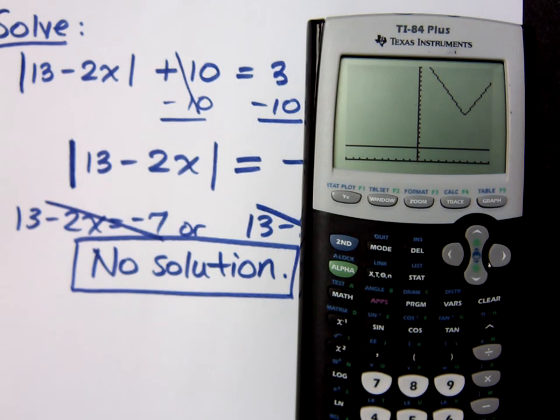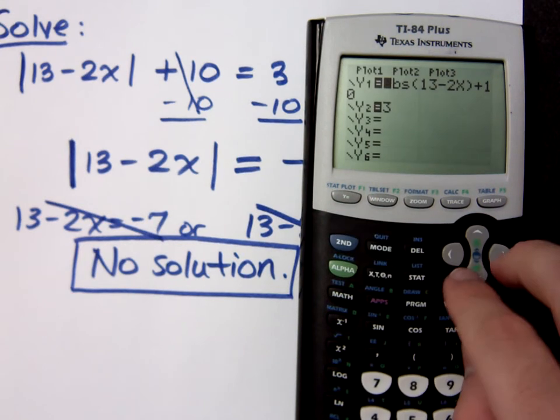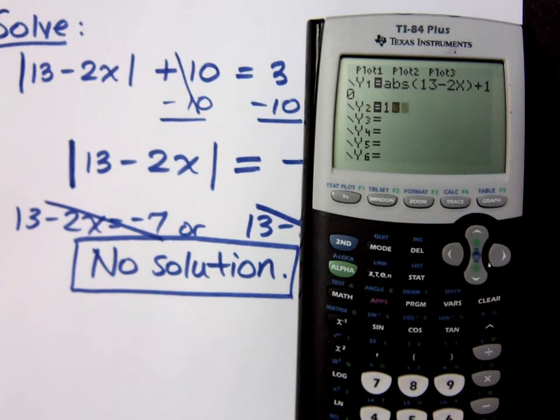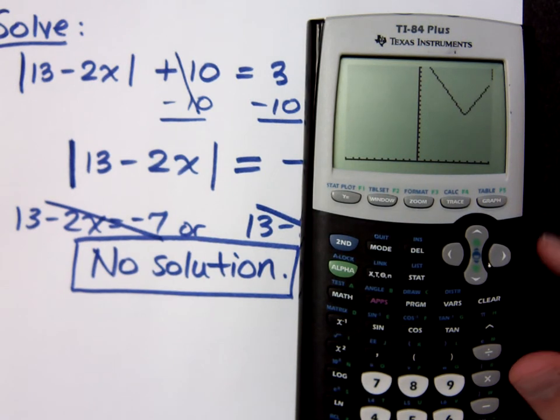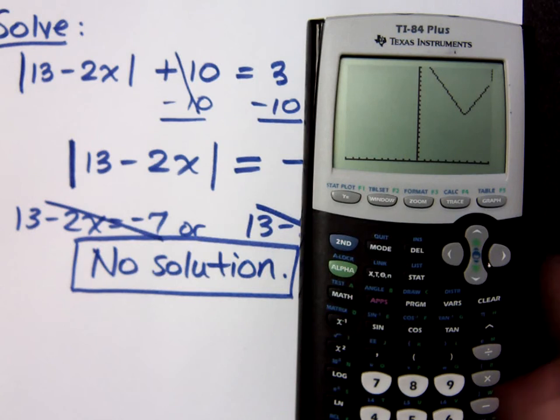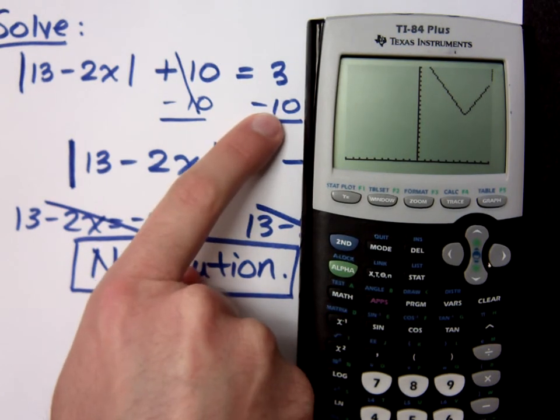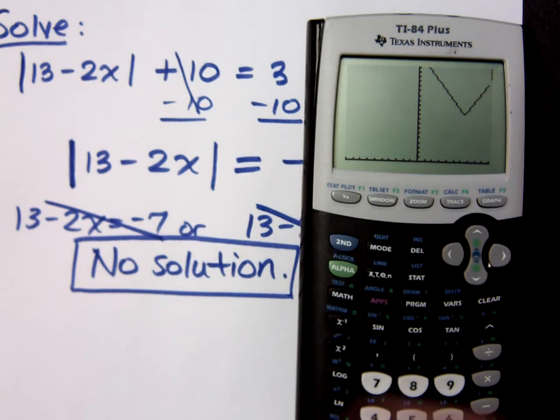Does that make sense? What if I change this up a little bit? What if I said instead of being equal to 3, it was equal to 13? Will y equals 13 intersect this guy? If this were 13 and I subtracted 10, I would get a positive value here and it would work out. And I would have two solutions if it were 13, right? Cool.